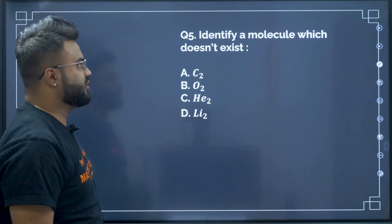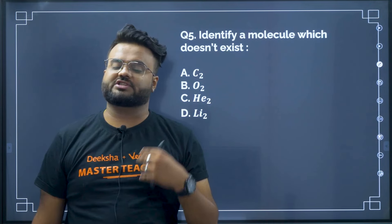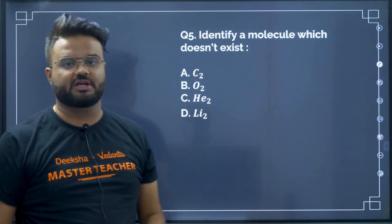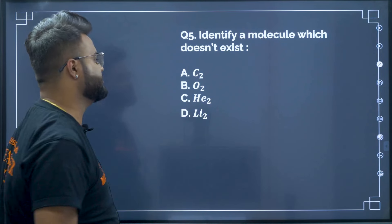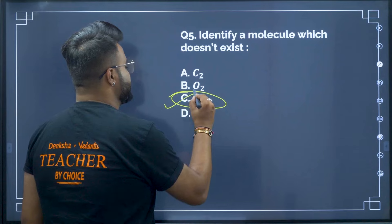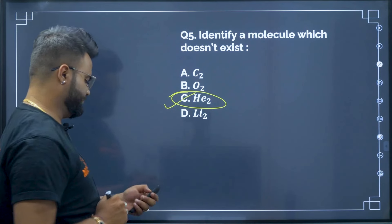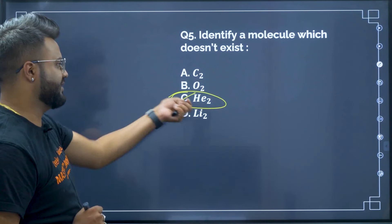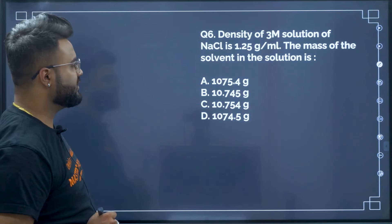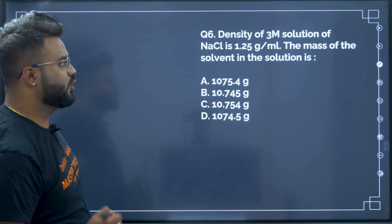Question 5: Identify a molecule which does not exist. The molecule having a very high ionization energy will not exist — that is helium. Helium never exists as a molecule, so the correct option is helium.